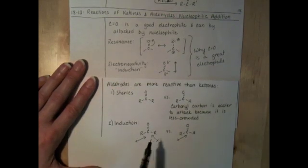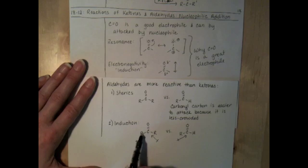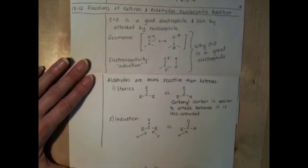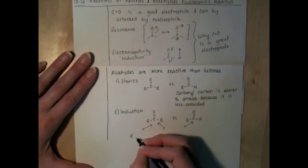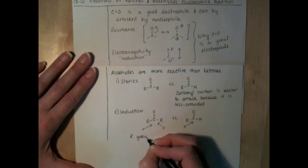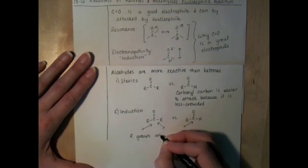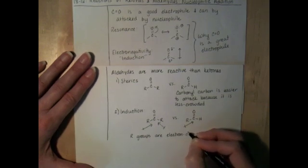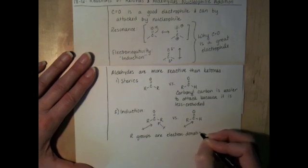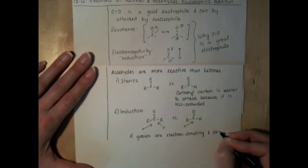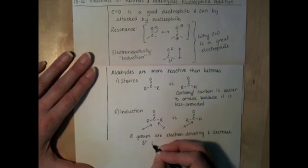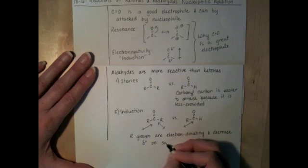In the ketone, the carbonyl carbon is being more stabilized by the two alkyl groups. So it's happier, and it's less reactive, and it's less likely to get hit by a nucleophile. So the alkyl groups, for both aldehydes and ketones, alkyl groups in general are electron-donating. And as a result, they decrease the partial positive charge, the magnitude of the partial positive charge on the carbonyl carbon.